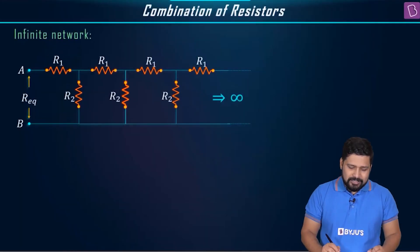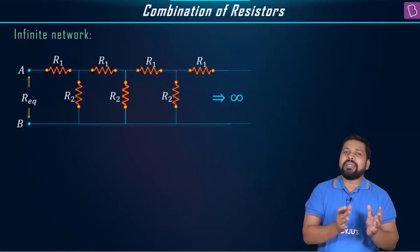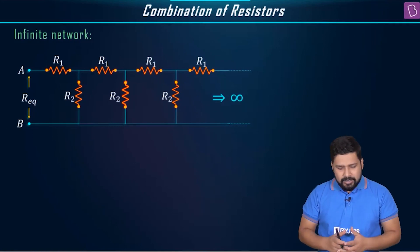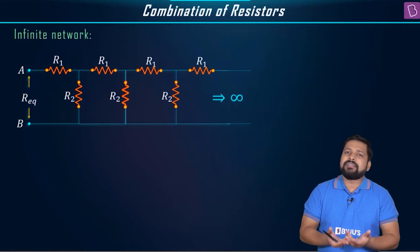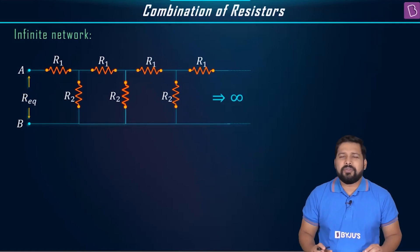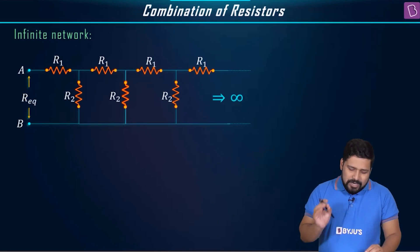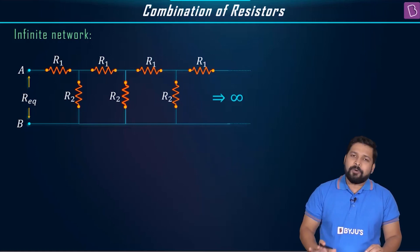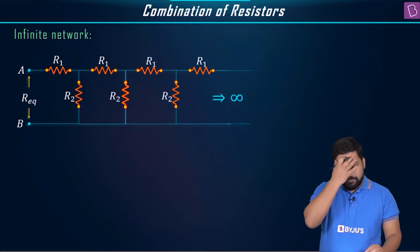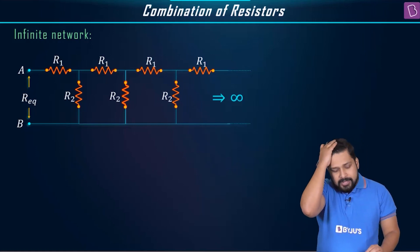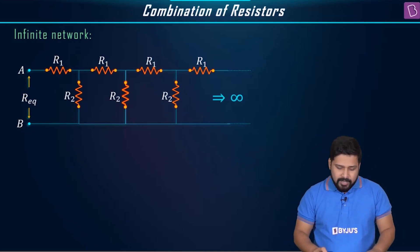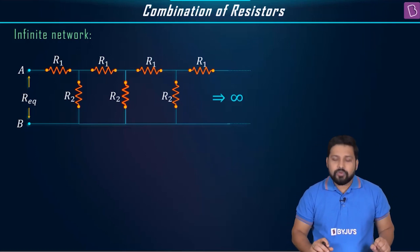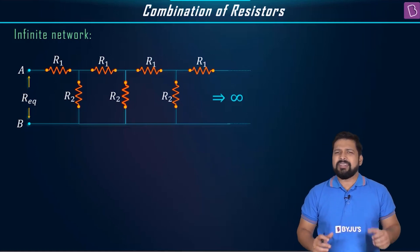A combination of resistors when we have an infinite network — these are also called infinite ladder networks, though different books may use different names. In this kind of problem, you are most often asked to find the equivalent resistance between point A and B, and this is how the network is going to look.